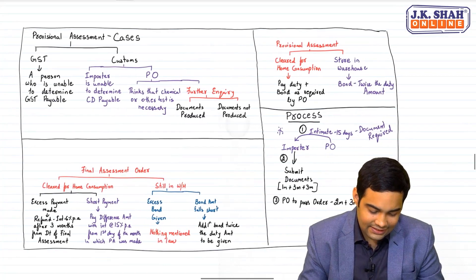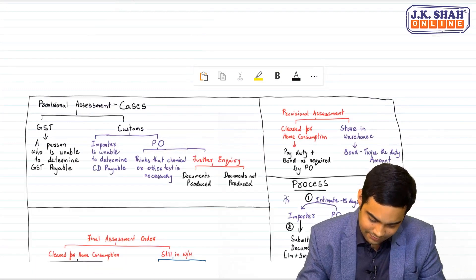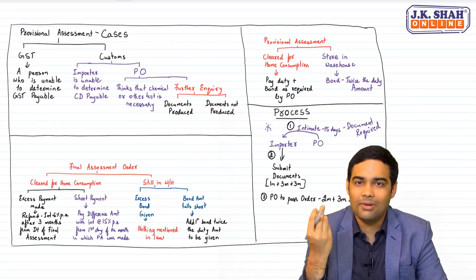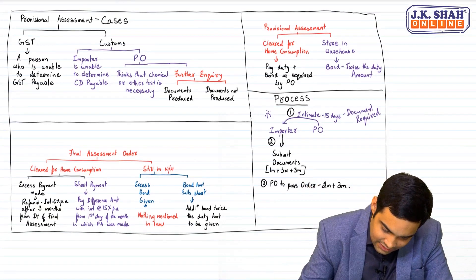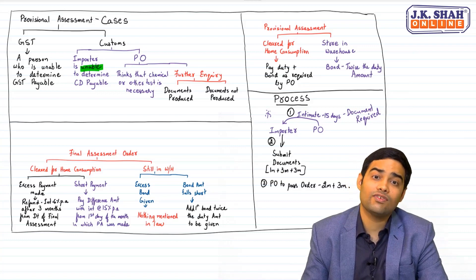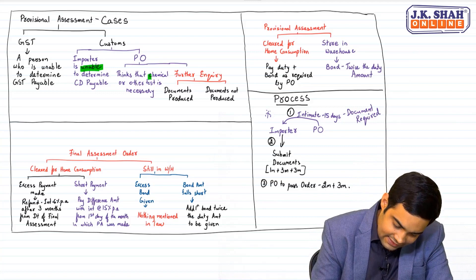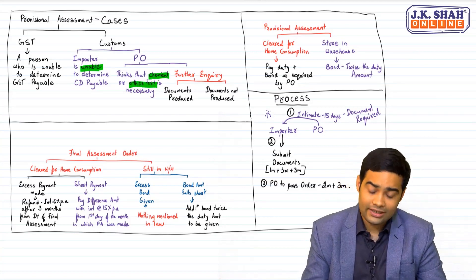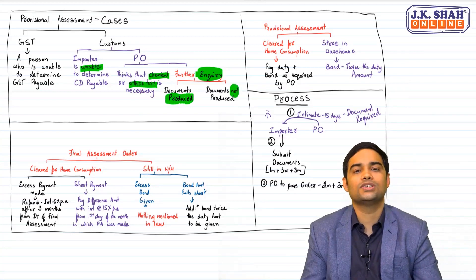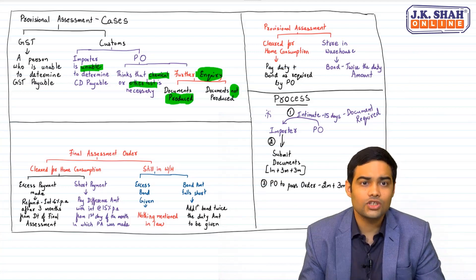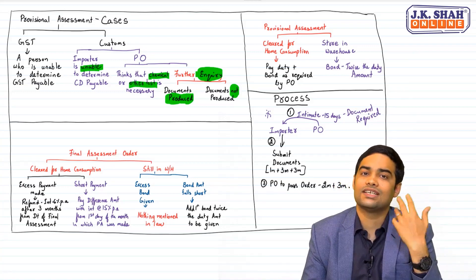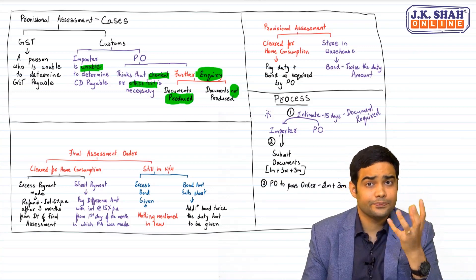The cases where provisional assessment can be done: in GST there is only one case - when I am unable to determine my GST payable. In Customs, the first case is where the importer is unable to determine the custom duty payable. Second, the proper officer can go for provisional assessment when he thinks a chemical or other test is necessary. Third, when a further inquiry is to be made even where documents have been produced. Fourth, when documents have not been produced and further inquiry is needed.